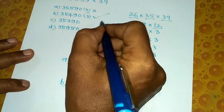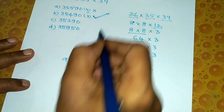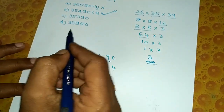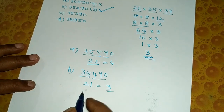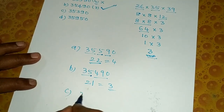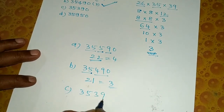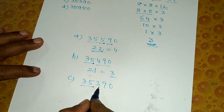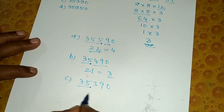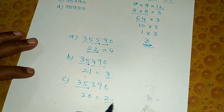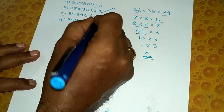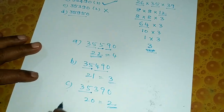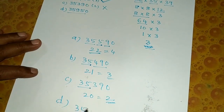Checking option C: 3, 5, 3, 9, 0. Add 3 plus 5 equals 8, plus 3 equals 11, plus 9 equals 20. Then 2 plus 0 equals 2. The correct answer should be 3, but this gives 2. This answer is not 3, so this option is wrong.